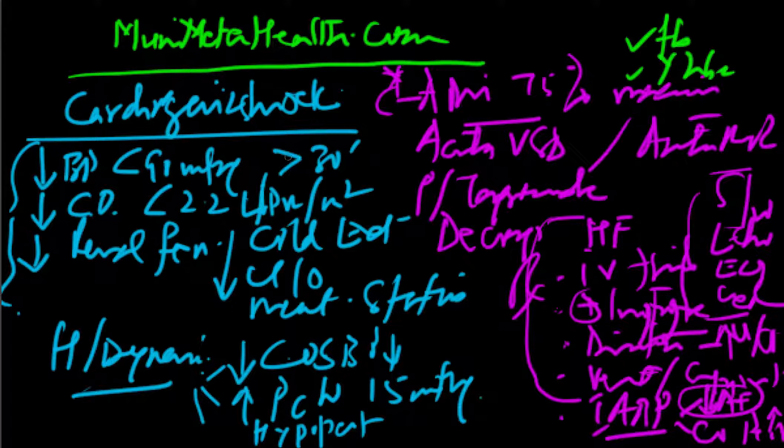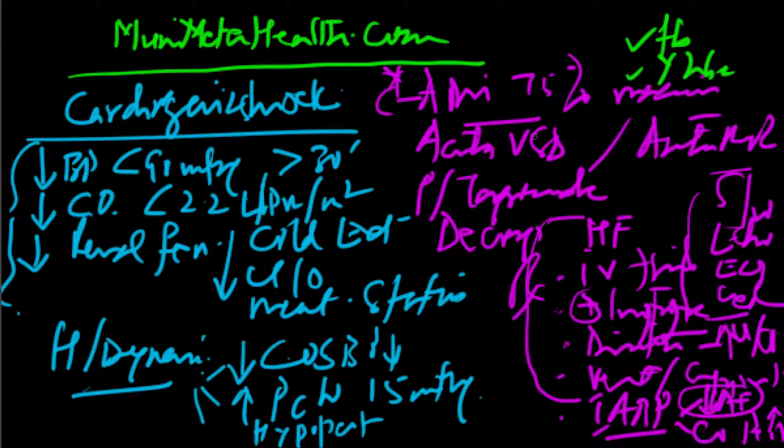So, in a nutshell, cardiogenic shock manifests with these parameters. Hemodynamics are these. Pulmonary wedge typically is more than 15. Cardiac output is low, and hypoperfusion states persist. Urine output is declining over a period of time, and a sustained low blood pressure.